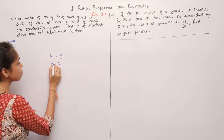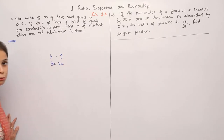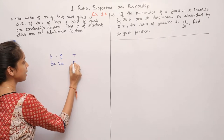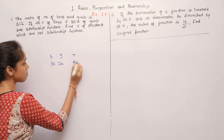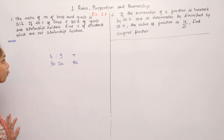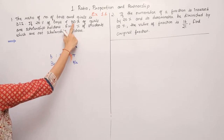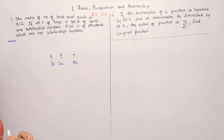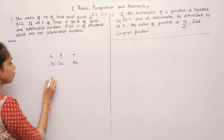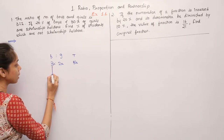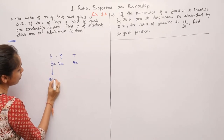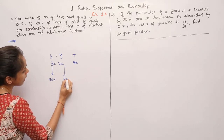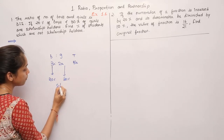If we take the ratio as 3 to 2, the total students will be 5x, since boys plus girls equals total students. Then, 20% of boys and 30% of girls are scholarship holders.